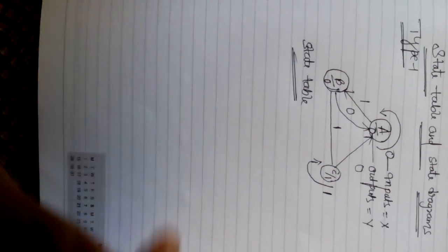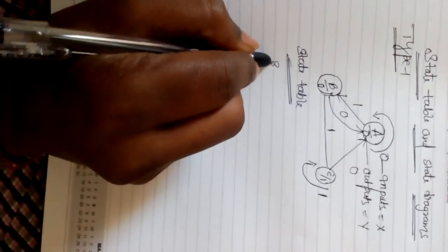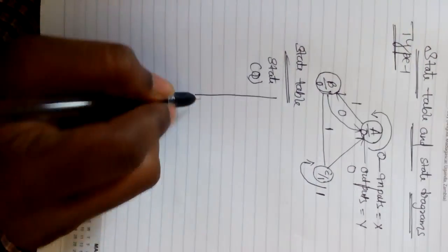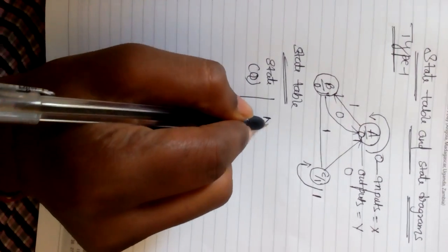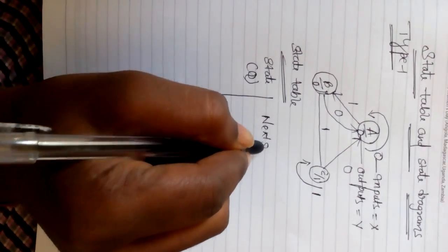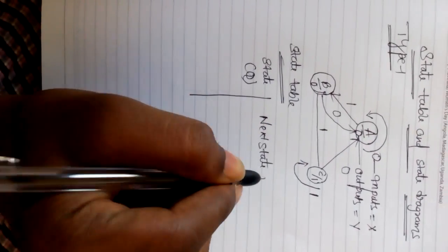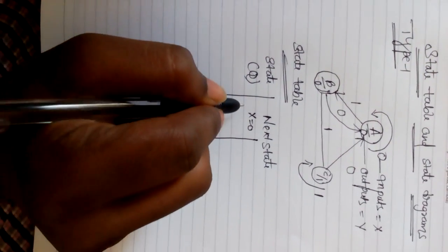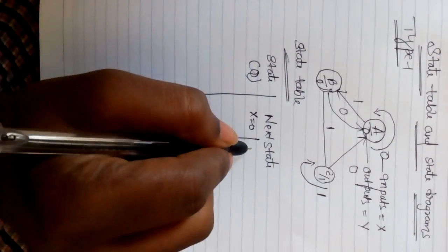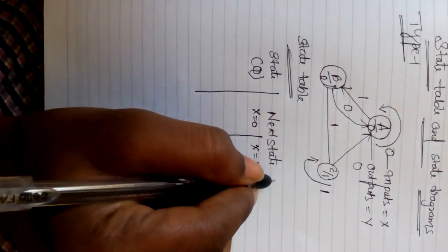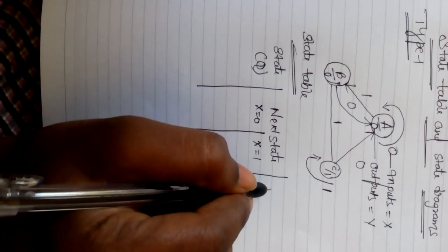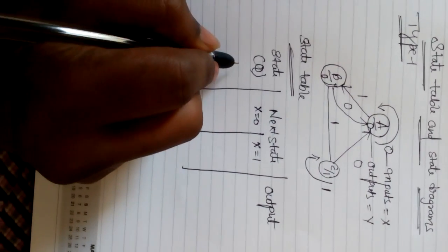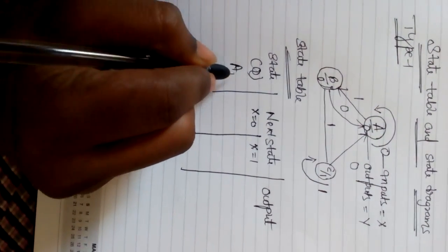For the state table, the present state is assumed as Q. The next state depends on two conditions: when X is equal to 0 and when X is equal to 1. We also have an output column. We have three states: A, B, and C.